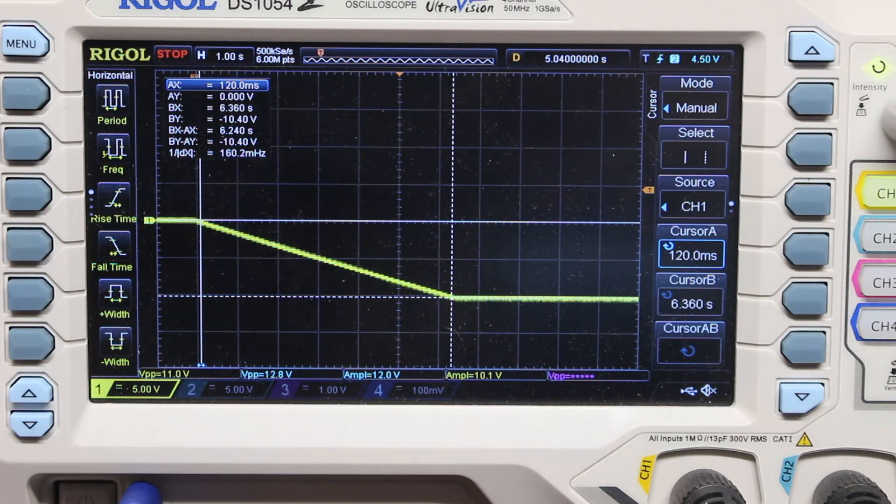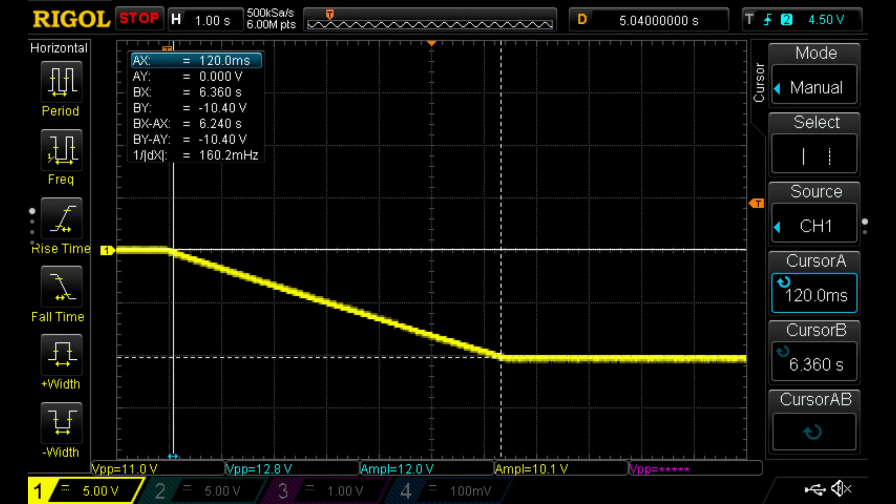Let's measure that drift and think about it. Well, what do you know? Past Kevin already set the cursors on the scope. The scope says that the output moved 10.4 volts in 6.4 seconds. About 1.6 volts per second.